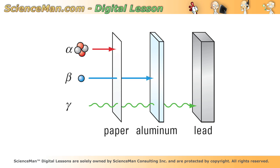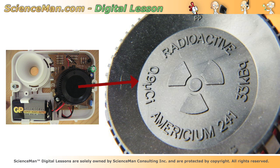Americium is a radioactive isotope that is used in smoke detectors. It ionizes air in an ionization chamber, which allows current to flow in the gap between two metal plates. But once smoke floats up and interrupts that current, the alarm goes off. But what you wouldn't want to do is smash a piece of americium from a smoke detector and then inhale the dust.